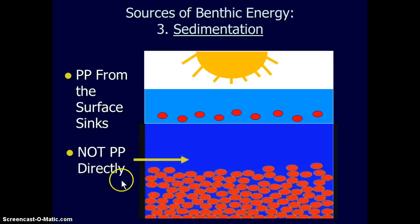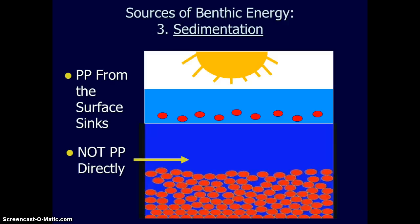So it's not primary productivity directly to the benthos. That ends this lesson on the benthic environment and its input energy. The next lesson will be about the benthos — the actual organisms and how they fit into energy cycling. But before you get to that, I want you to watch the video on this main page and see some real-life examples of how sedimentation fuels benthic organisms. See you next lesson, thank you.